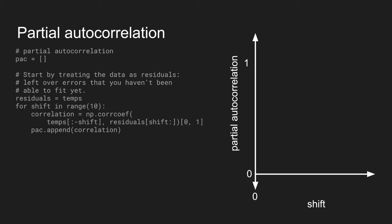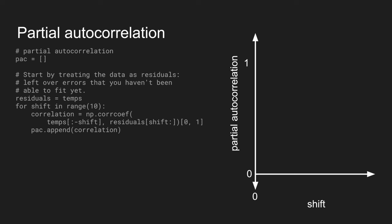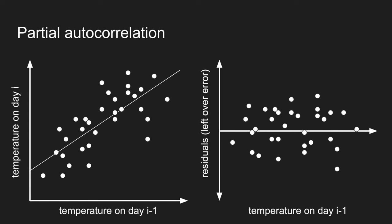So, in our very first correlation between, with a shift of one, we take and we calculate the temperature on day I versus the temperature on day I minus one. And then we find the residuals, what's left over after we fit. What are those errors? What are those deviations from the best fit line?